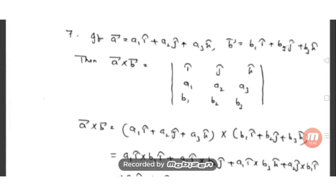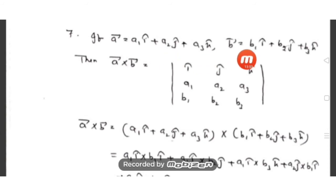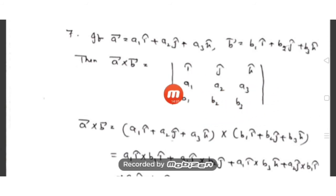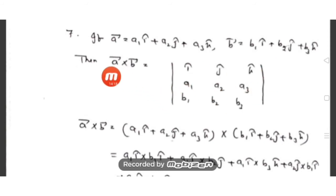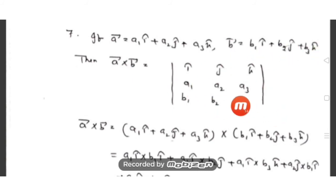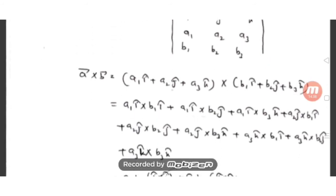Now I give the formula for cross product when vectors are in component form. If a-bar = a₁i-cap + a₂j-cap + a₃k-cap and b-bar = b₁i-cap + b₂j-cap + b₃k-cap, then a-bar cross b-bar equals the 3×3 determinant with first row i-cap, j-cap, k-cap; second row a₁, a₂, a₃; and third row b₁, b₂, b₃.